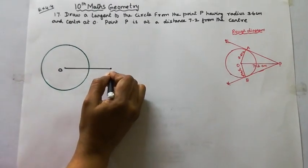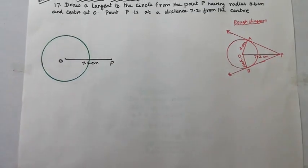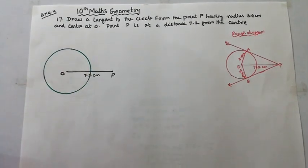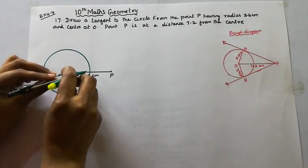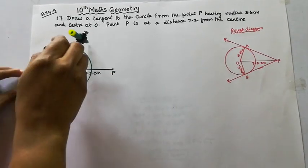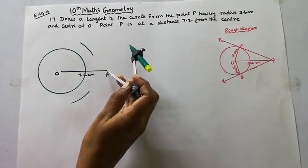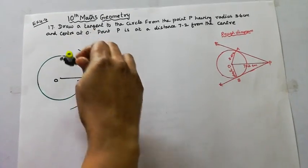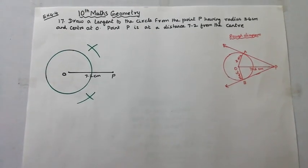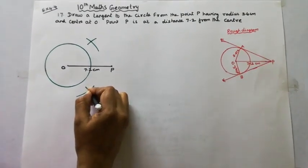OP is 7.2 cm. Draw the perpendicular bisector. OA is 3.6 cm. The length comes to 4.5. Mark the point on the arc and open the compass to that distance.